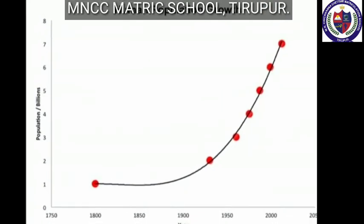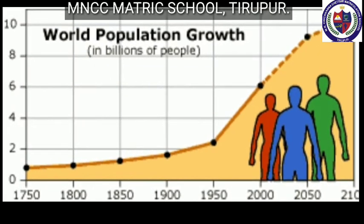Next topic: Population Growth. Population is a dynamic phenomenon where the number, distribution, and composition are constantly changing. Human population increases as babies are born and decreases as people die. As a result, human population grew slowly, but about the time of the Industrial Revolution it began to increase rapidly. Natural increase of population is the difference between the birth rate and the death rate.